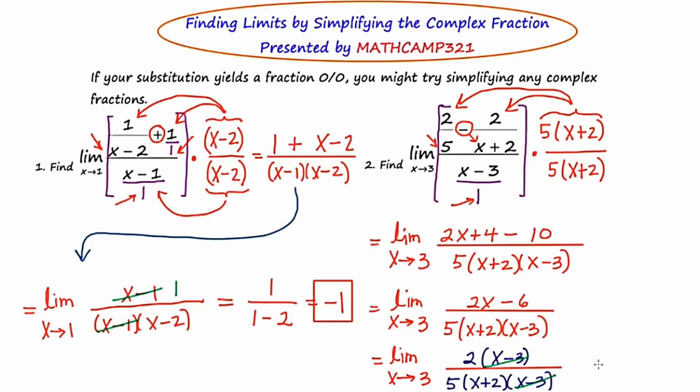And now we plug in 3 for every occurrence of x. We're going to end up with 2 on the top. We have the 5 on the bottom. 3 plus 2 is another 5. So it looks like we're going to get an answer of 2/25.